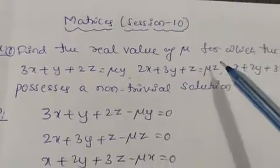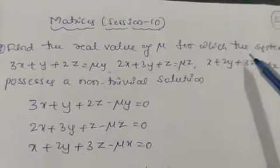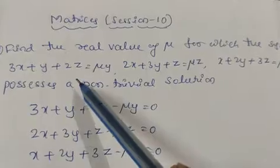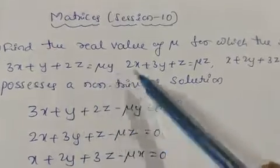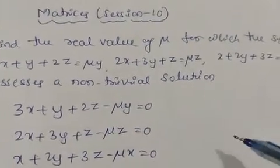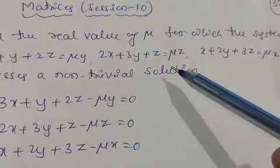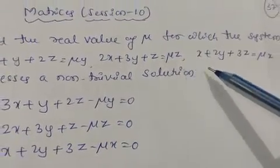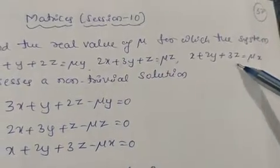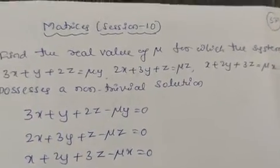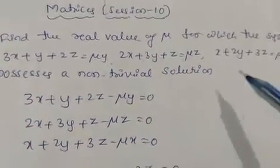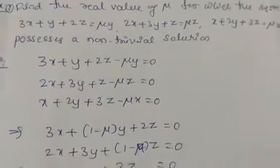Find the real value of mu for which the system: 3x plus y plus 2z equals mu y; 2x plus 3y plus z equals mu z; x plus 2y plus 3z equals mu x — possesses a non-trivial solution.